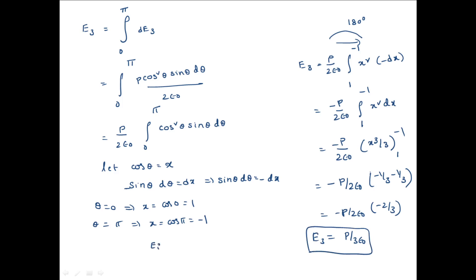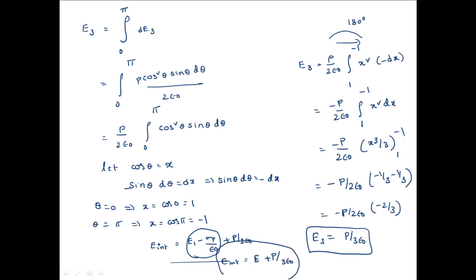Therefore the total internal electric field in the dielectric material is E = E1 − σp/ε₀ + P/(3ε₀). Here E1 − σp/ε₀ can be written as the effective field. So the final expression for the internal field is E_internal = E_effective + P/(3ε₀). This is the Lorentz relation for the internal field produced in the dielectric material.